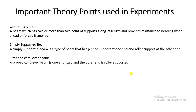Here are important theory definitions. A continuous beam has two or more points of support along its length and provides resistance to bending when a load is applied. A simply supported beam has a pin support at one end and a roller support at the other, or both ends are freely supported. A probe cantilever beam has one end fixed and the other end on a roller support, which is used to measure the amount of moment produced on that side of the beam.